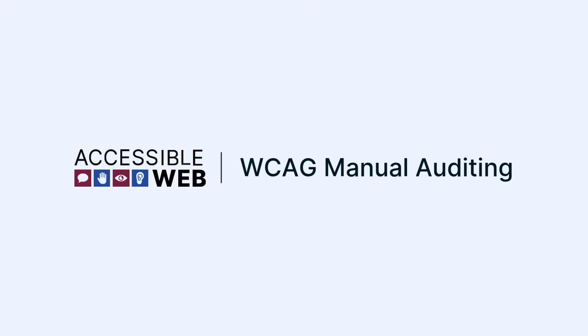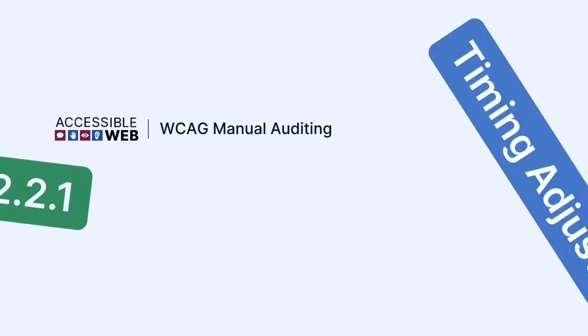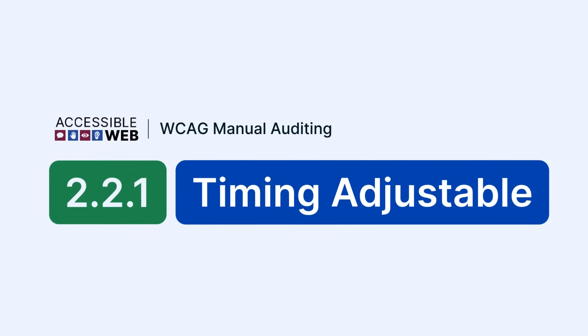Accessible Web. WCAG Manual Auditing. Success Criterion 2.2.1, Timing Adjustable. Let's jump in.